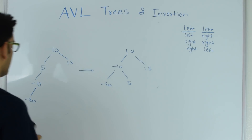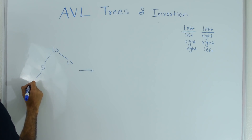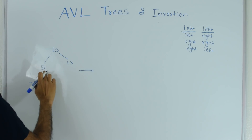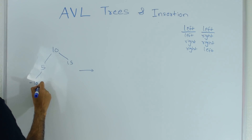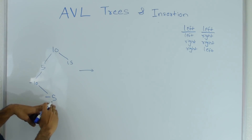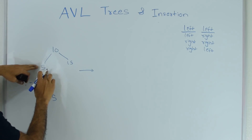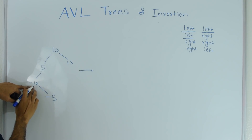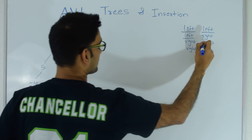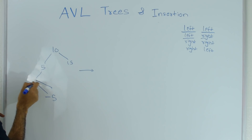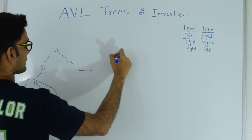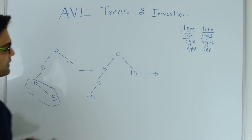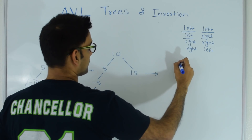Next let's look at the left-right case. Suppose I'm trying to insert -5 into this tree. -5 is less than 10, less than 5, but greater than -10, so it inserts right here as -10's right child. Going up, -5 does not violate, -10 does not violate, but 5 does. For 5, height of the left subtree is greater — that's the first 'left'. For its left child -10, height of the right subtree is greater — that's the 'right'. So first we do a left rotation at -10, which gives us 10, 5, -5, -10, 15 — a left-left case. Then we do a right rotation to convert it into an AVL tree.